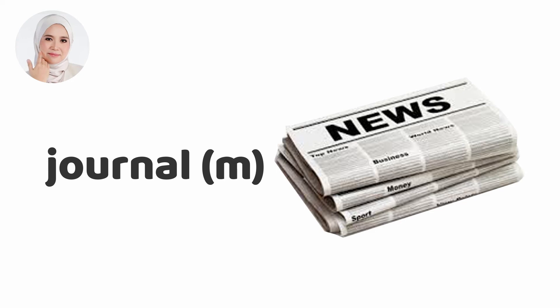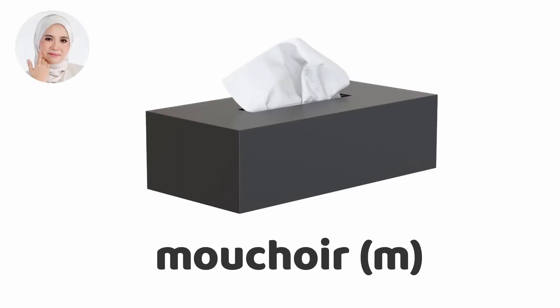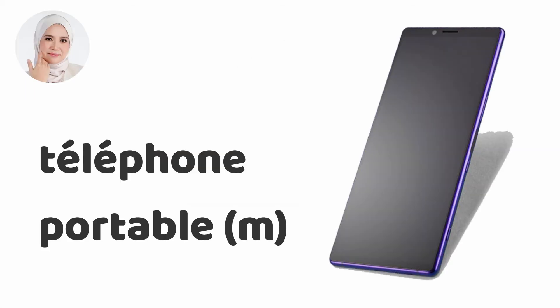In the last row you have portefeuille. Portefeuille means wallet and it is masculine. The second last item is mouchoir. Mouchoir is a tissue — not a box, but a tissue — and it's a masculine noun. And the last item you have is téléphone portable. Téléphone portable, and it is masculine.